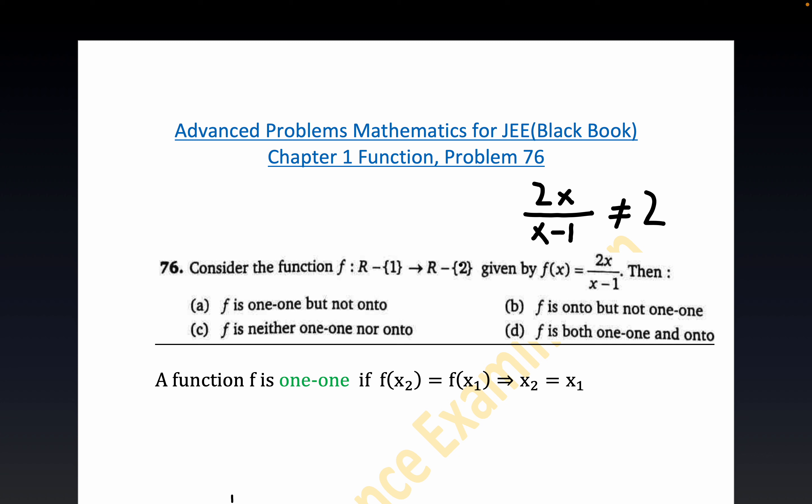Now they went ahead and told you that 2 wasn't part of the range. In a similar fashion, you can't divide by 0, so that's why 1 is excluded from the domain. We're supposed to figure out which of these four statements about one-to-one and onto is satisfied.